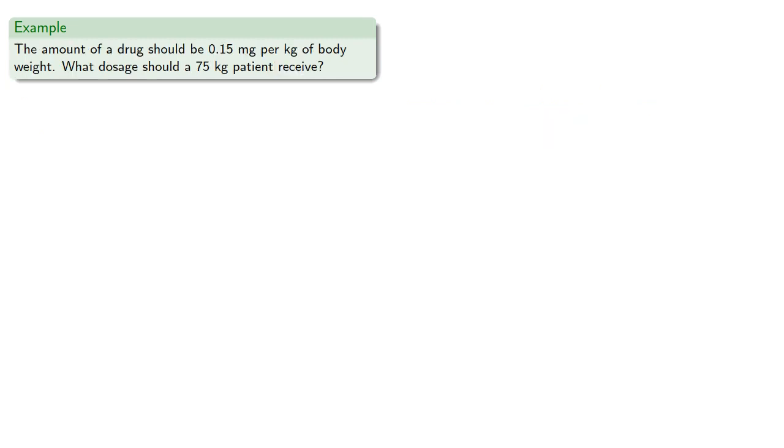For example, the amount of a drug should be 0.15 mg per kg of body weight. What dosage should a 75 kg patient receive?